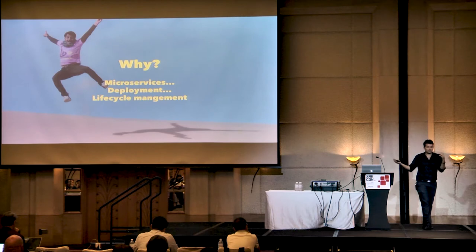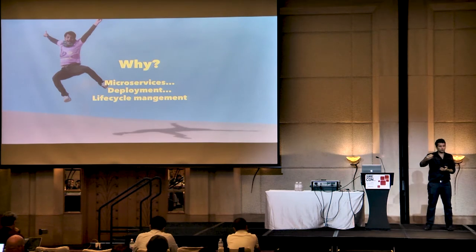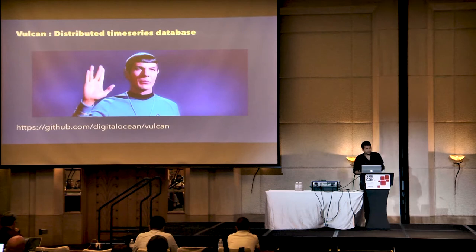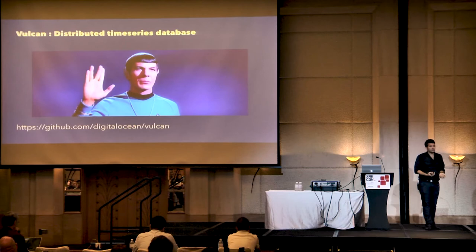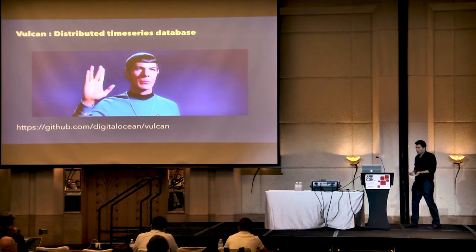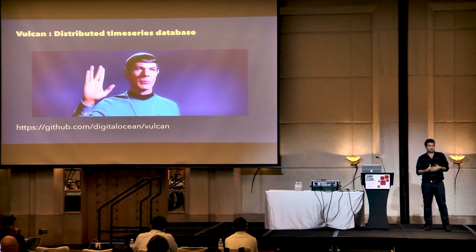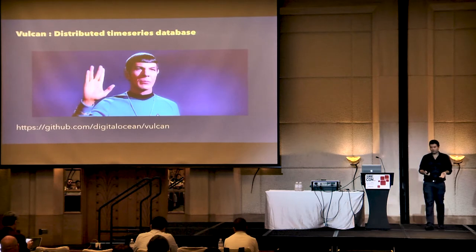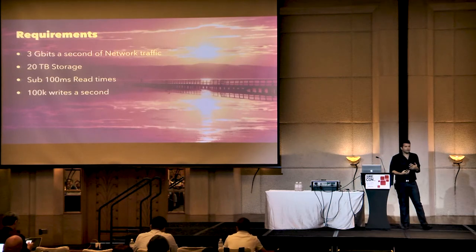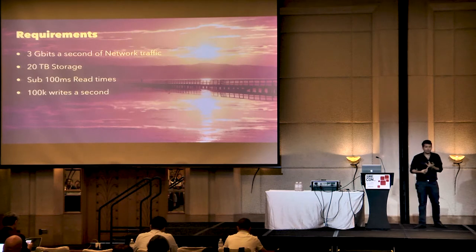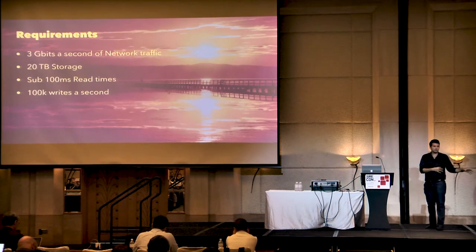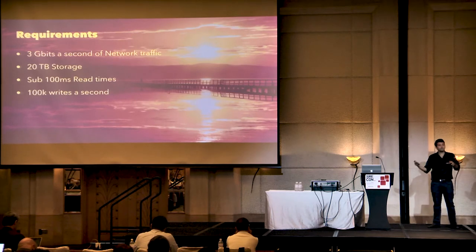There's a handoff a lot of times between development teams and ops teams around how to do deployments, and containers make deployments so much easier. To color this talk: I work on a distributed time series database written in Go called Vulkan, which is totally open source. We're building a time series database that collects metrics across a million virtual machines — storing 20 terabytes of data, handling three gigabits of network traffic of metrics coming in, with very low read and write latencies. I'm going to talk about how we deployed it onto first Mesos and then Kubernetes.